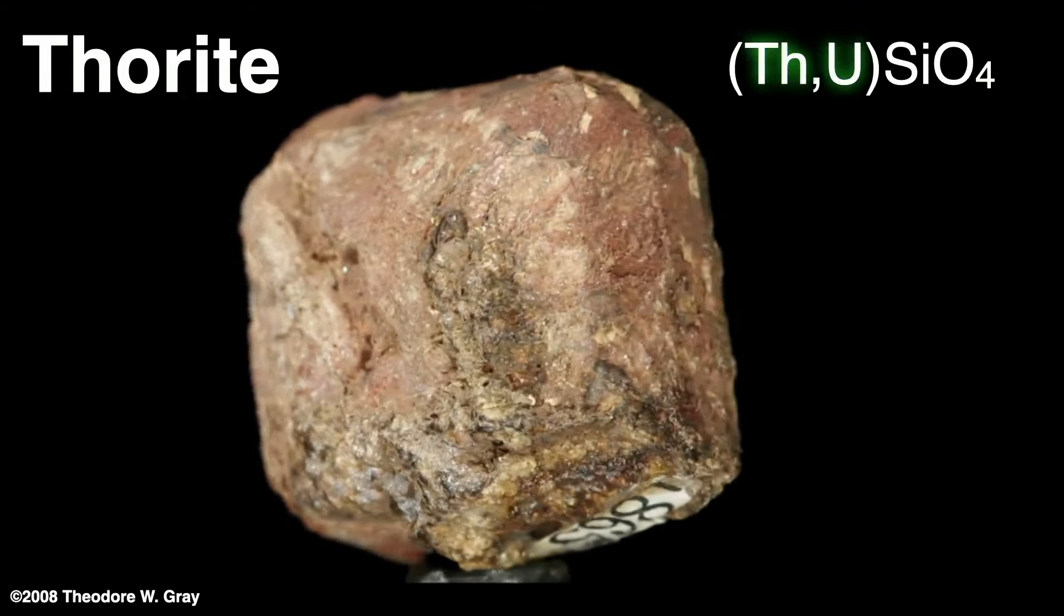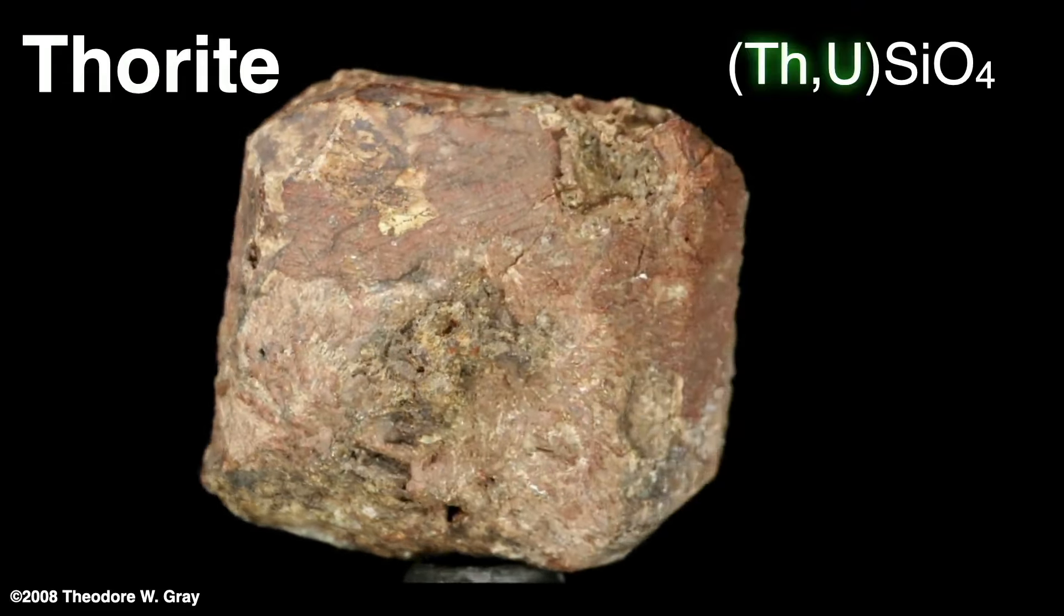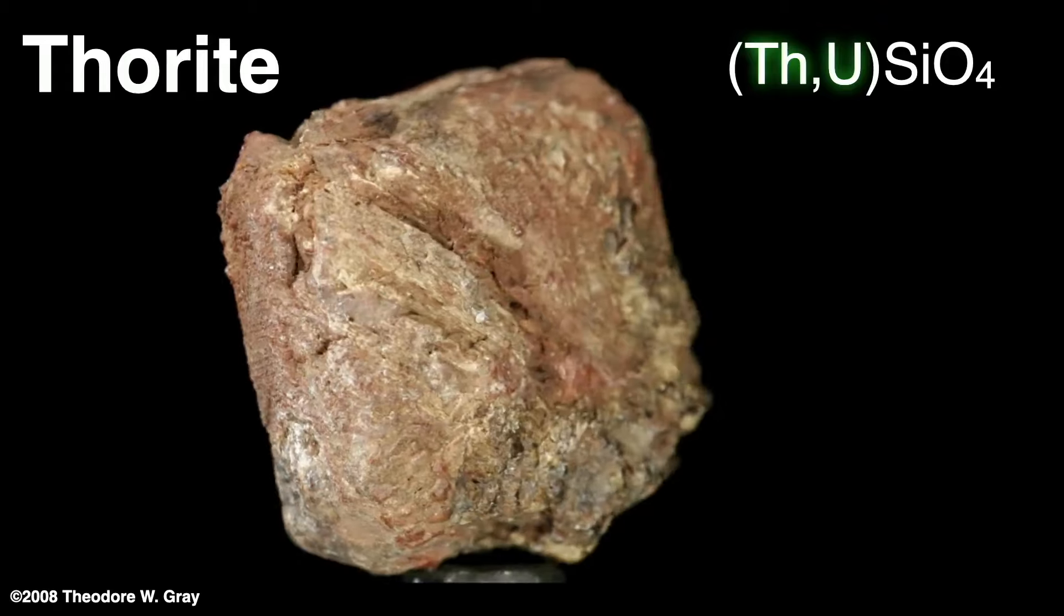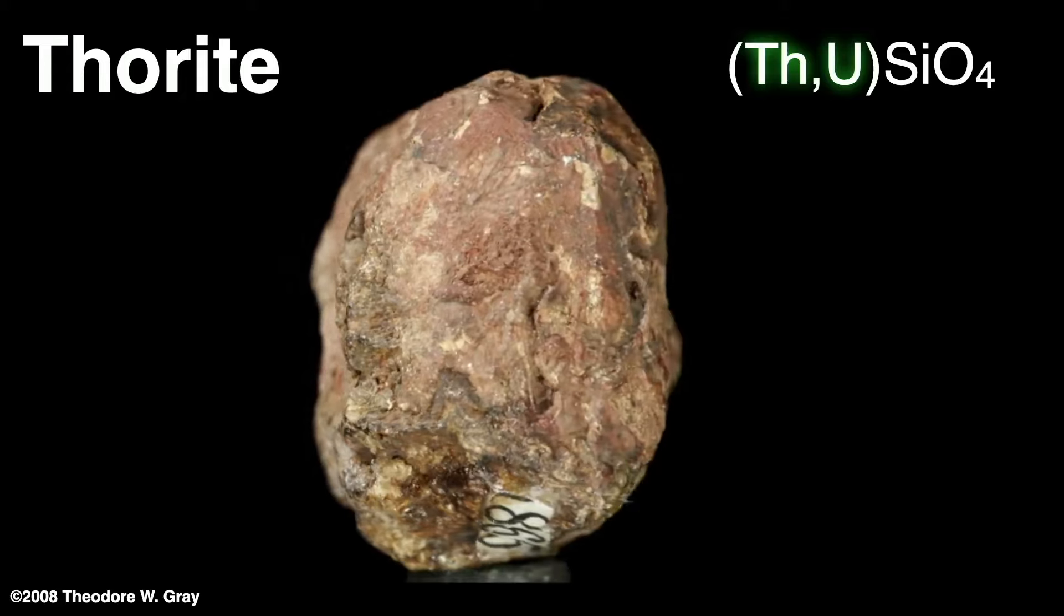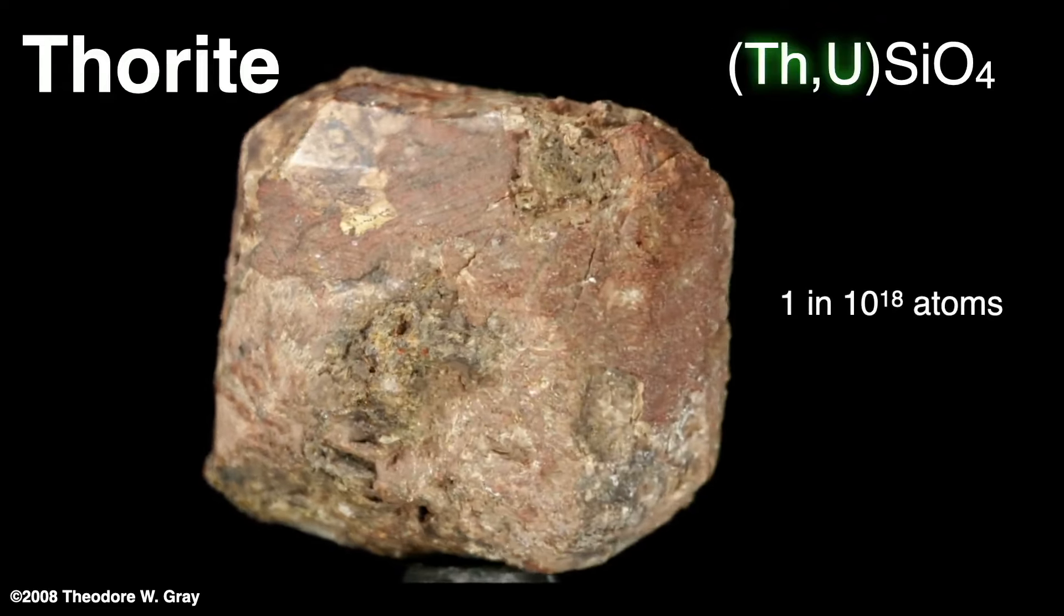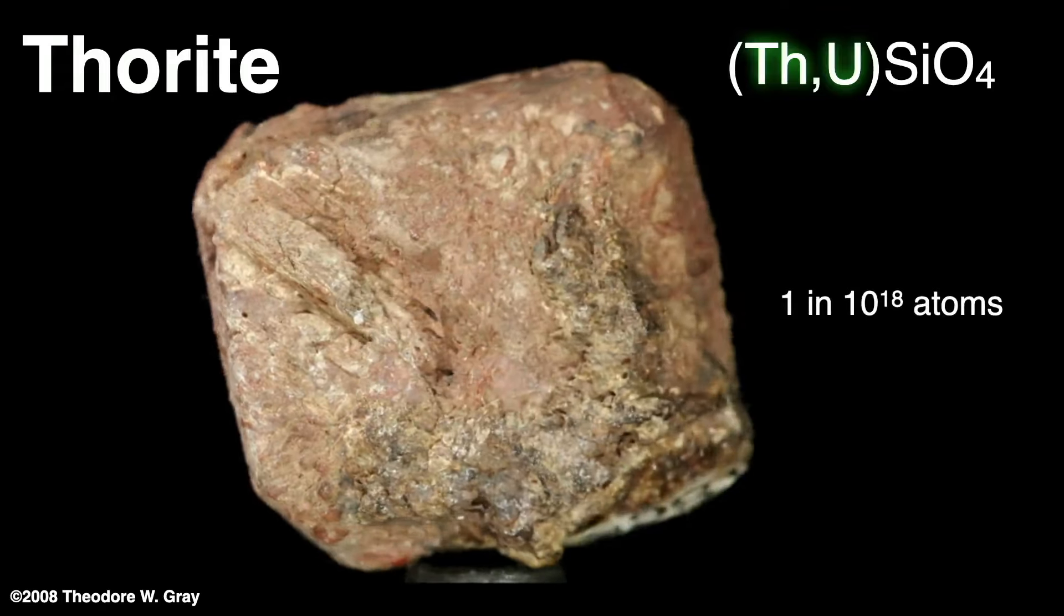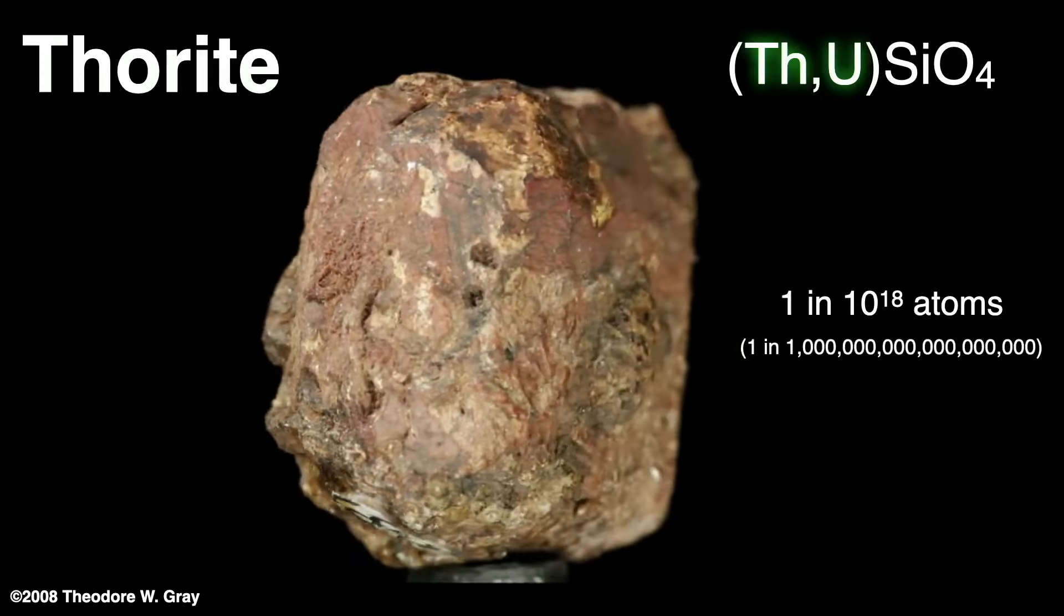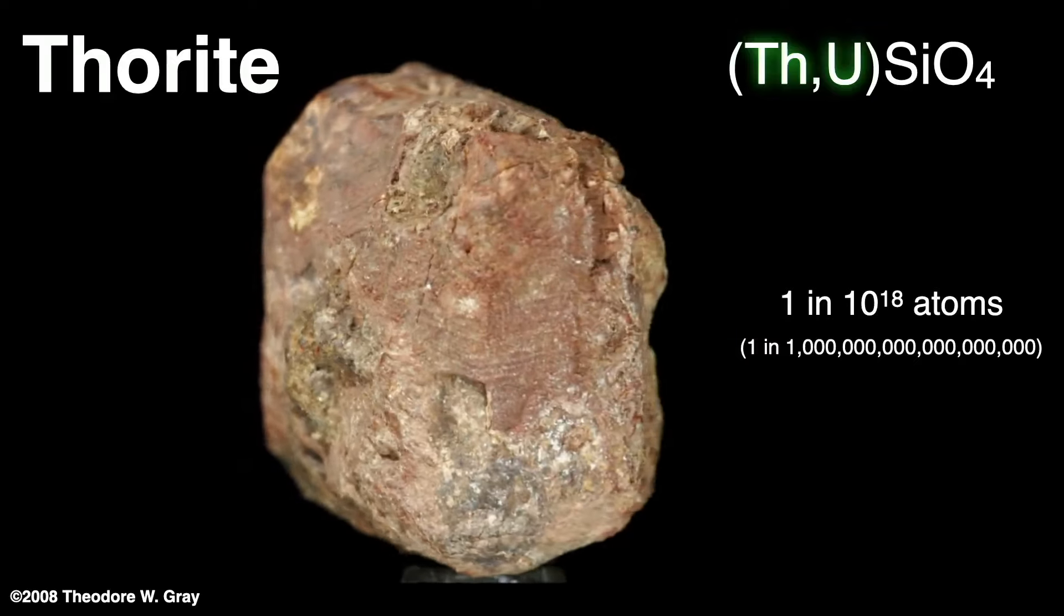Some of that thorium and uranium decays into francium, which only hangs around for a brief time. So brief, there's probably not an atom present in this sample, just the chance there may be an atom. An estimation places it as one atom of francium for every 10 to the 18th atoms of uranium. That's one for every quintillion uranium atoms. Francium is the second rarest element after astatine.